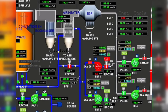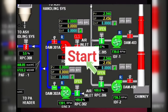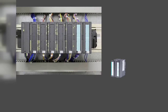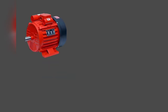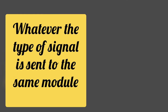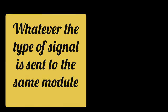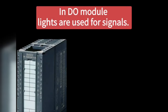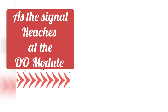To operate the motor, the motor icon is clicked. After that, click on start. After clicking on start, these command signals are sent to the digital output of PLC, meaning the DO module. This is done because motor start is a digital output signal. Whatever the type of signal, it is sent to the same module. In DO modules, lights are used for signals. As soon as the signal reaches the DO module, the light of that signal will also glow.